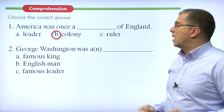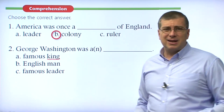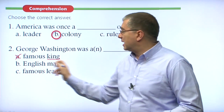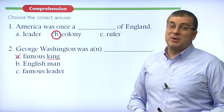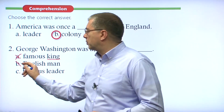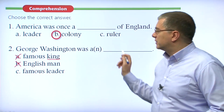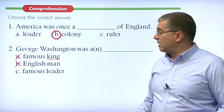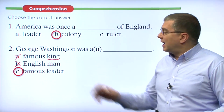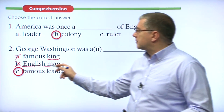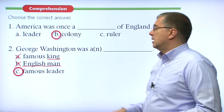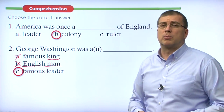Number two: 'George Washington was a what?' Was he a famous king? No, he wasn't a king. Was he a famous Englishman? Well, before the war he was an Englishman, but more importantly, during the war he became an American. The best answer is: George Washington was a famous leader. He helped lead the Americans to victory over the English. All Americans were Englishmen or Englishwomen before the war, but after the war they became Americans.